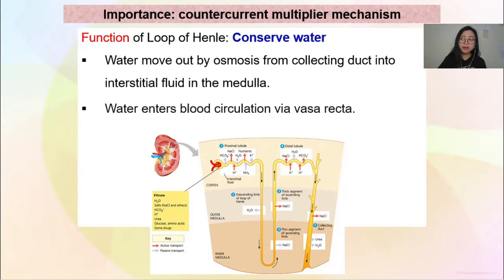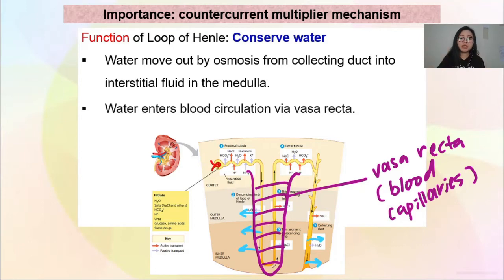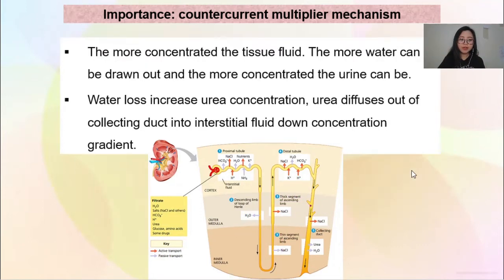Water will move out by osmosis from the collecting duct into interstitial fluid in the medulla. Daripada loop of Henle dan daripada collecting duct, air akan keluar dengan cara osmosis. Water will then enter the blood circulation via vasa recta. There is a blood capillary adjacent to the loop of Henle and surrounding tissues — air yang keluar melalui osmosis masuk ke dalam interstitial fluid, lepas itu diserap melalui vasa recta. The more concentrated the tissue fluid, the more water can be drawn out, and the more concentrated the urine can be.